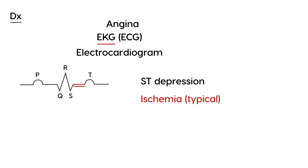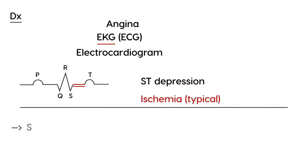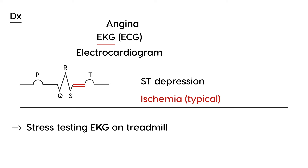The next test is stress testing — a very important and simple concept. It's an EKG performed while the person is exercising on a treadmill. The person walks on the treadmill while you're doing an EKG — so it's the same test, but with the person exercising. This gives you more information about the patient's level of ischemia, and it is both a sensitive and specific test.